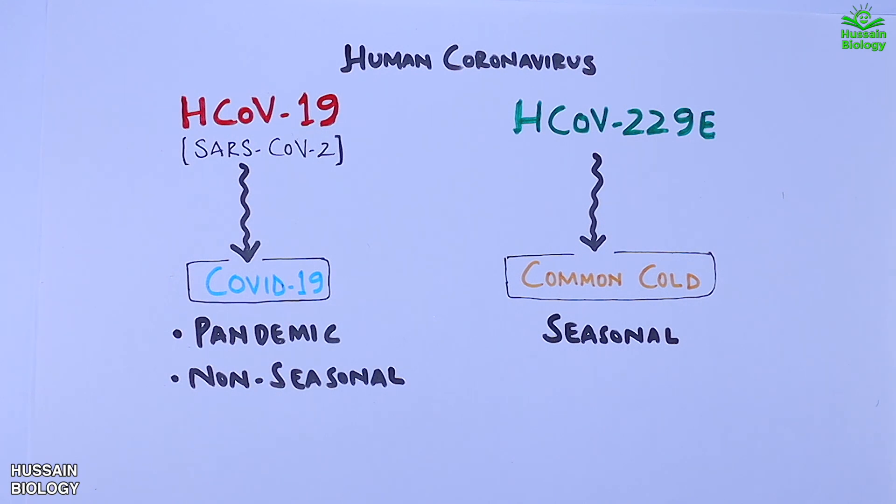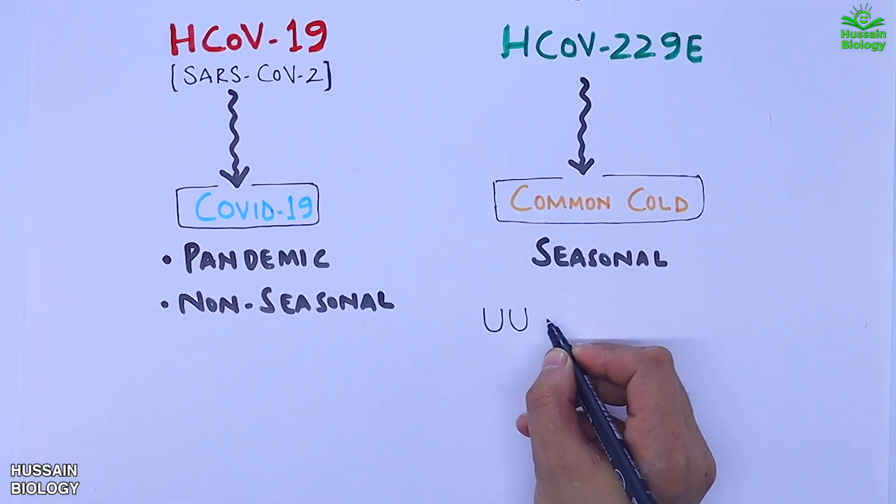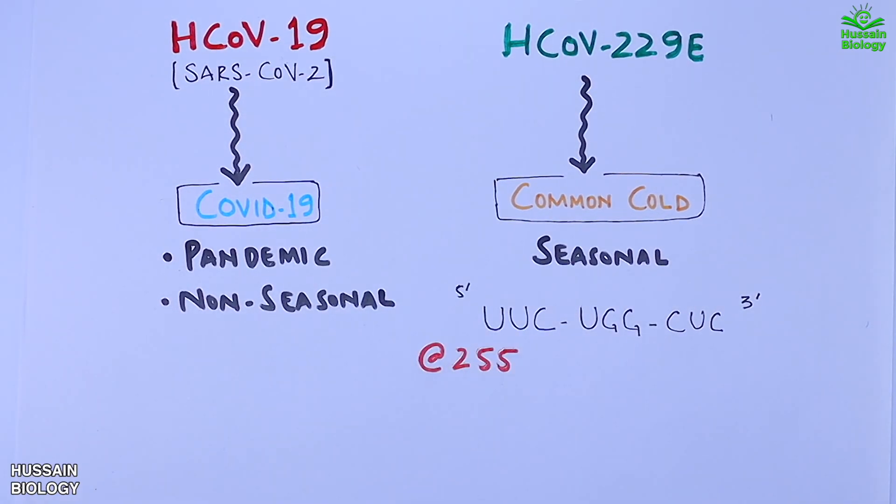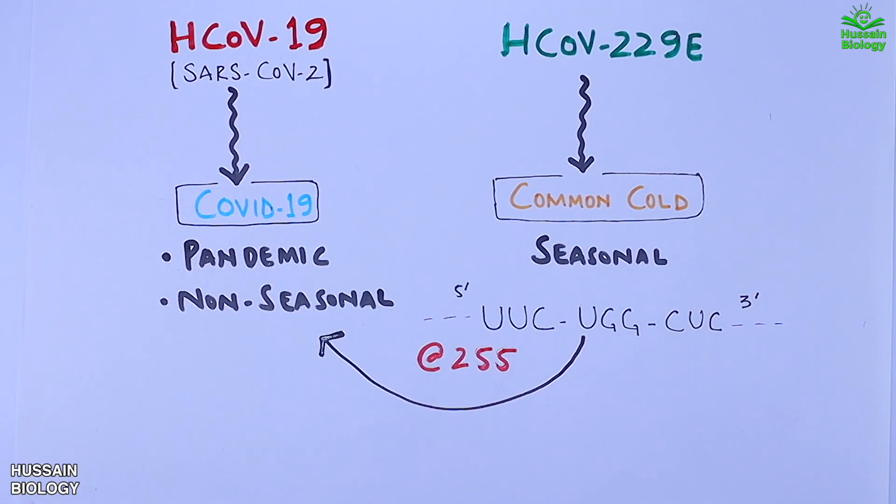Here we see we have a specific sequence present on HCOV-229E which is UUC, UGG and CUC. It's at 255 position. And somehow this sequence has got into the SARS-CoV-2 virus.